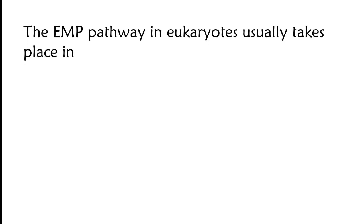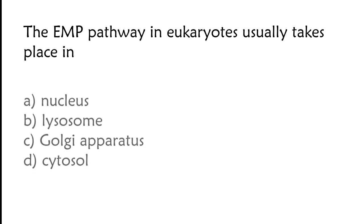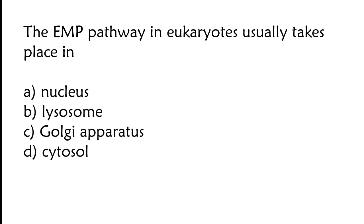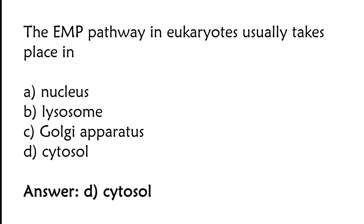The EMP pathway in eukaryotes usually takes place in — options: nucleus, lysosome, Golgi apparatus, cytosol. The correct answer is option D. Cytosol.